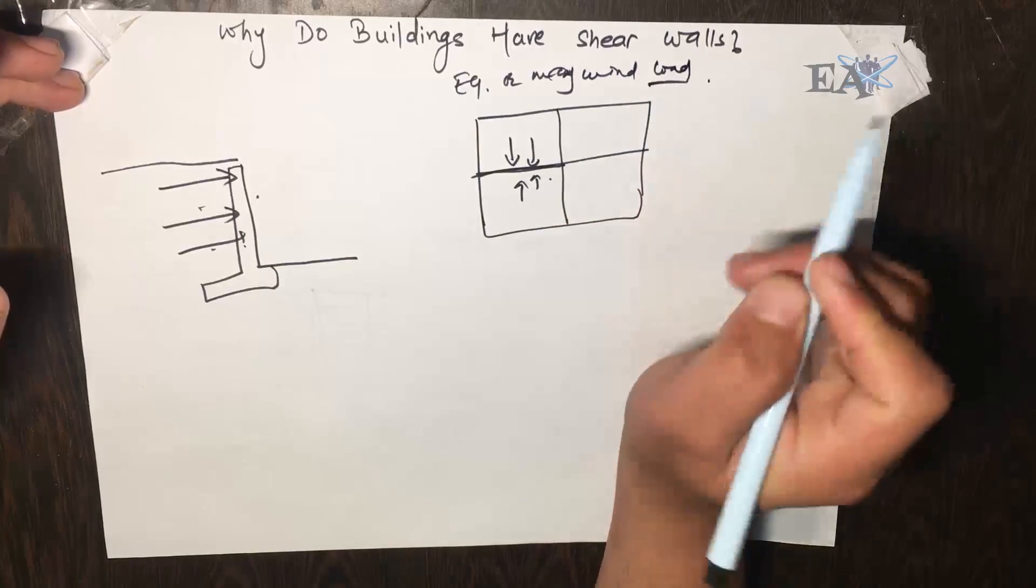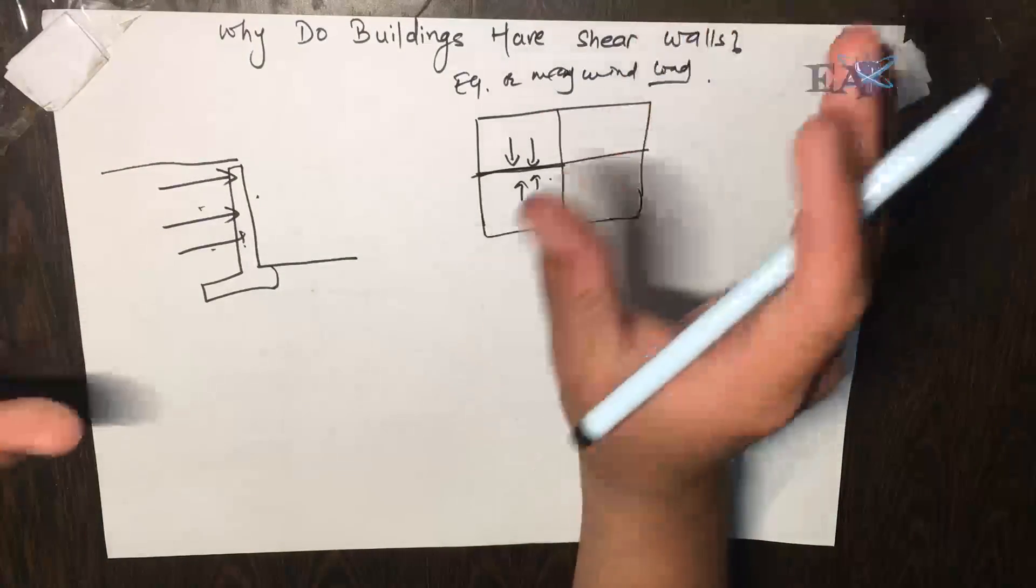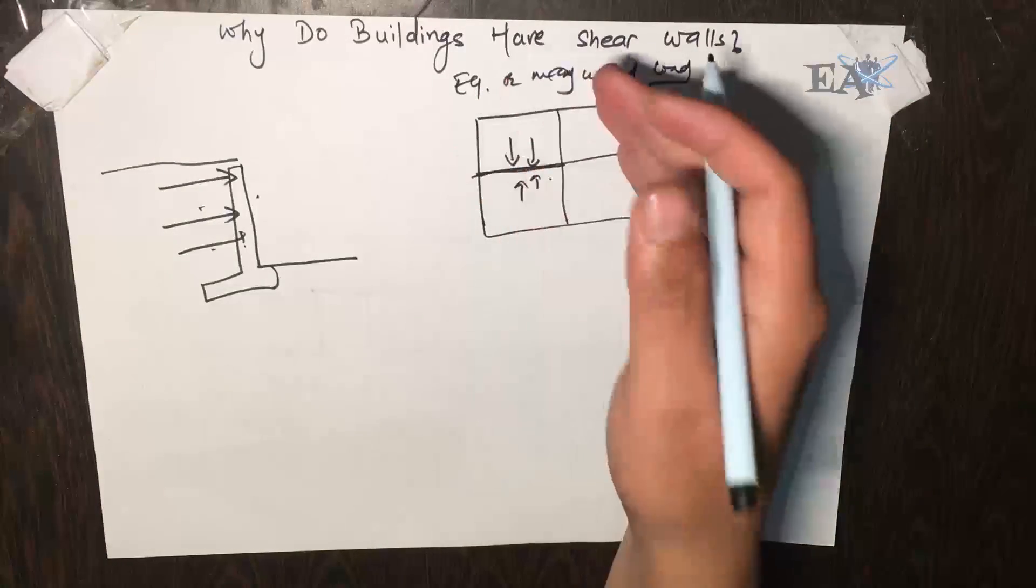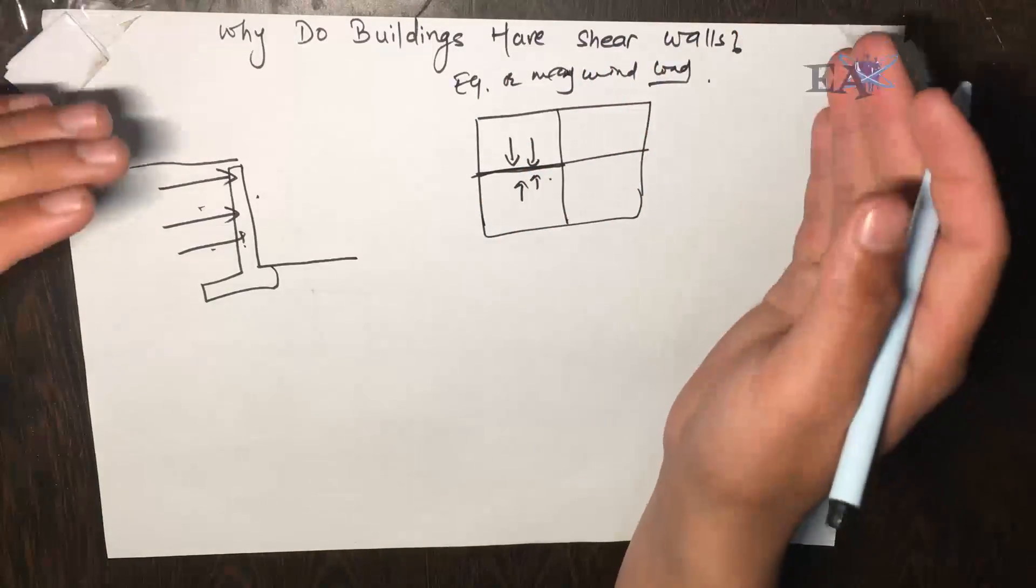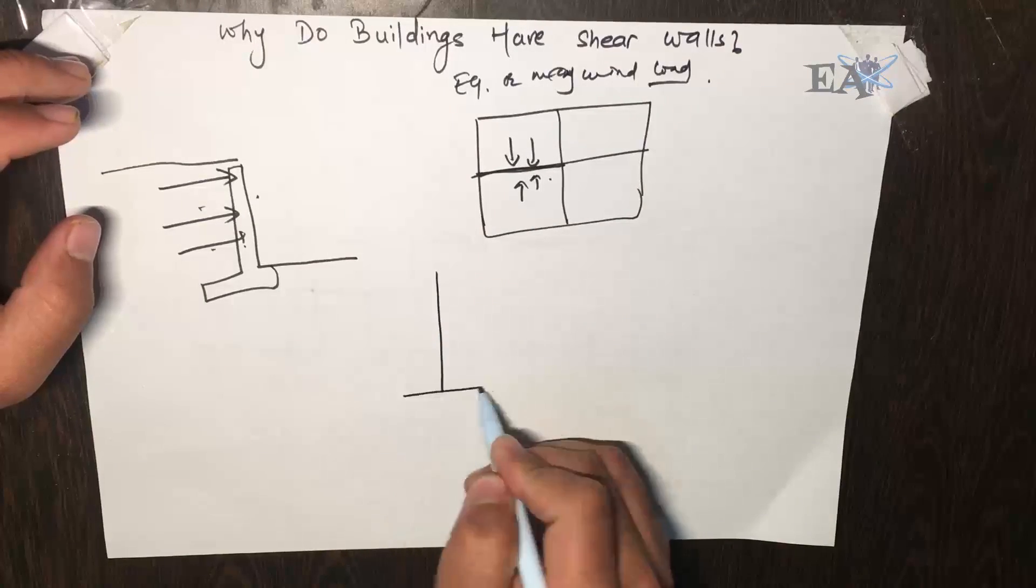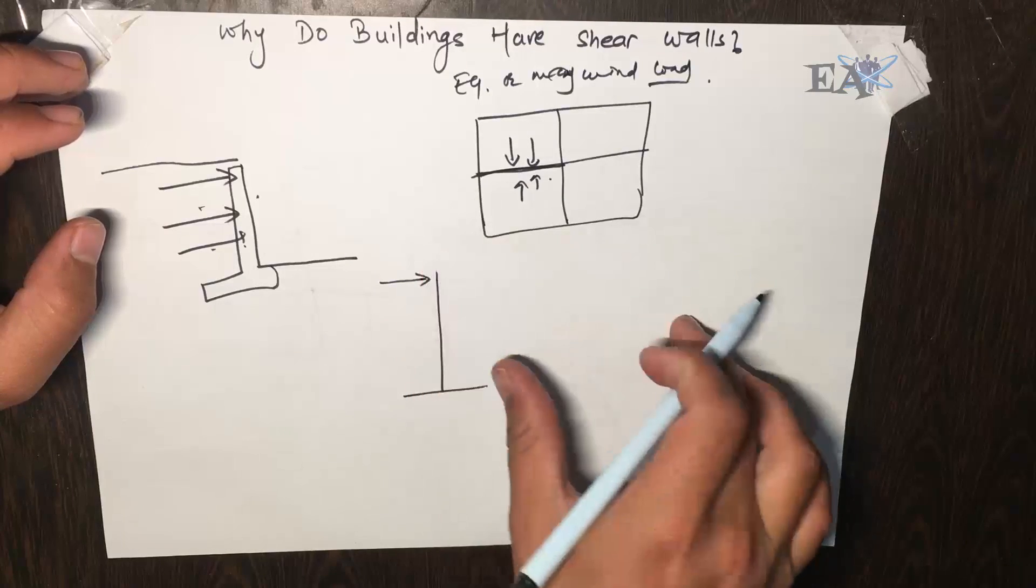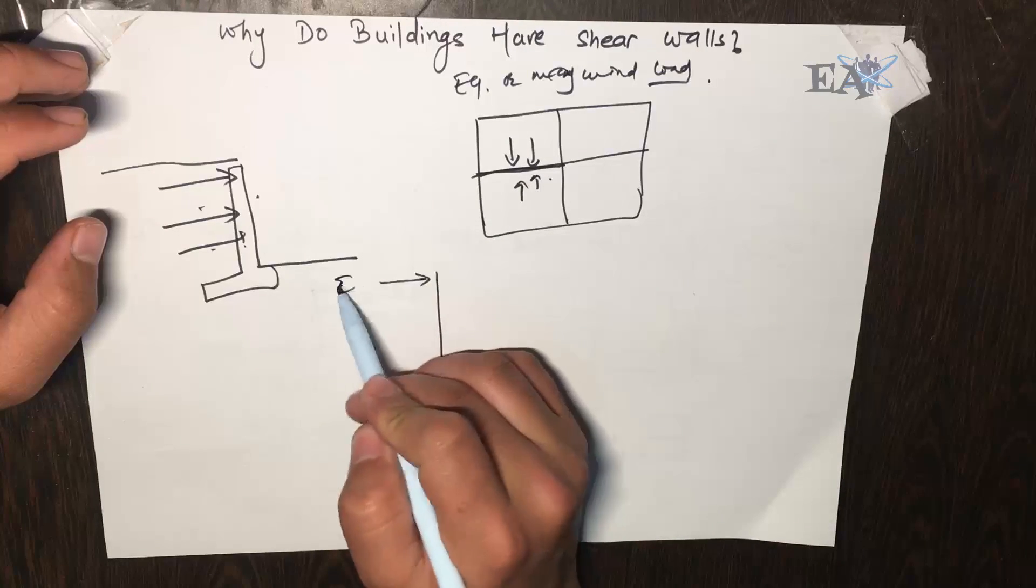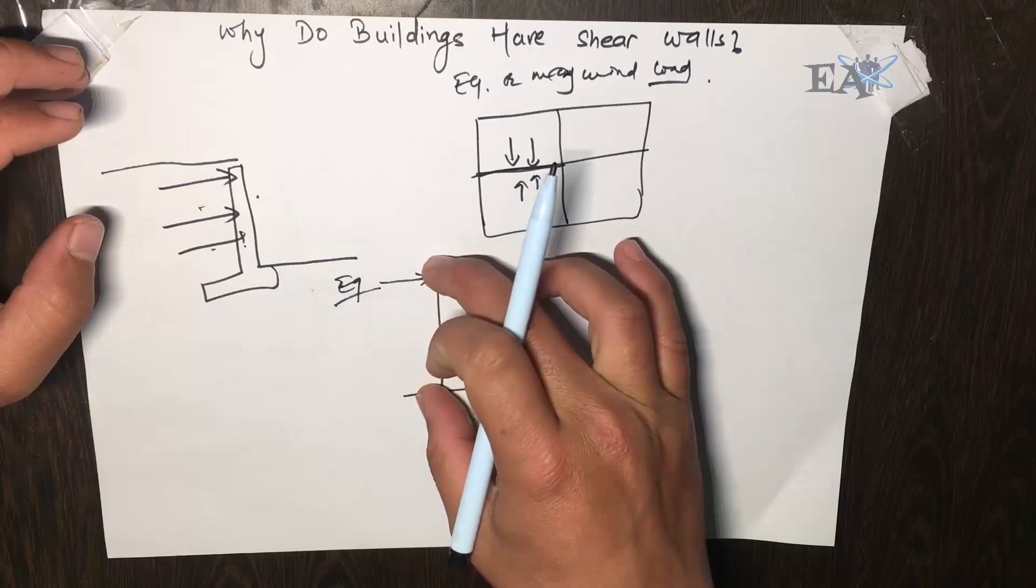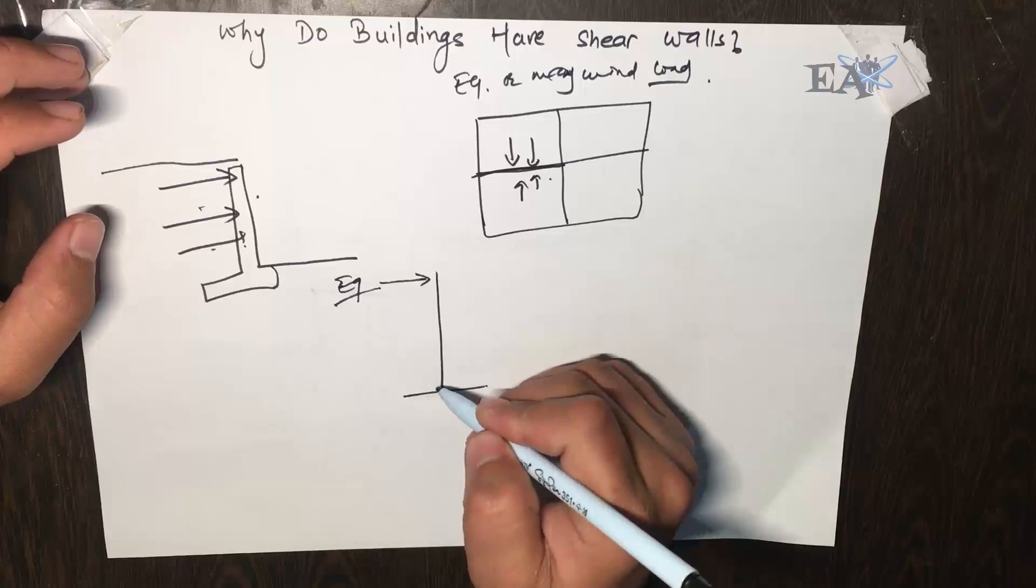What happens is that the structural designer, once he models the building and analyzes it and designs it, he checks for the lateral displacement of the building. So for example, if this is your building, he checks by how much this building displaces by the application of the earthquake load.